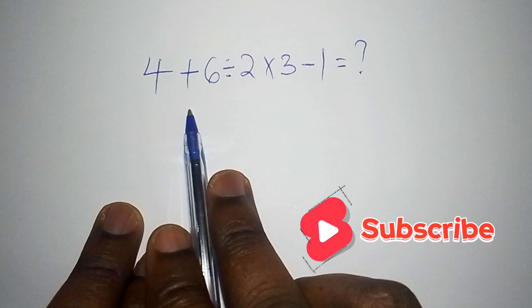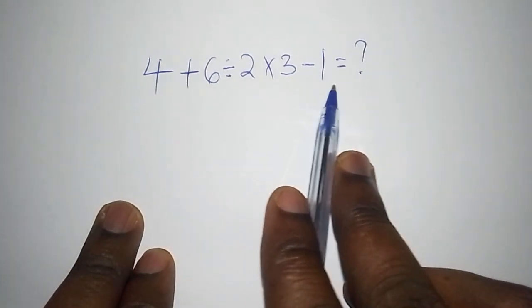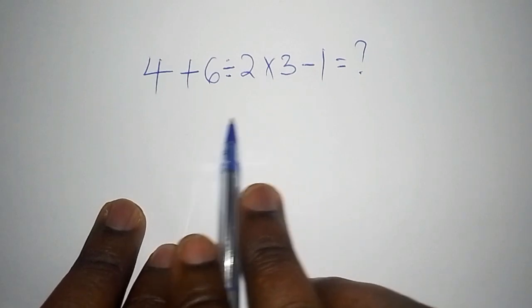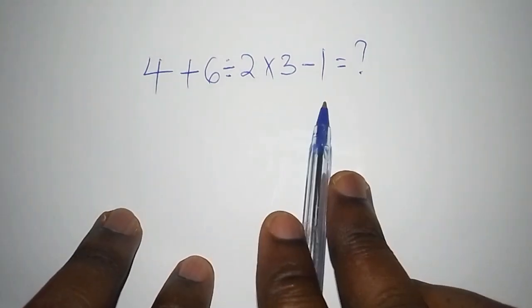Here we have 4 plus 6 divided by 2 multiplied by 3 subtract from 1. I want us to work out some of the mistakes that people do, within some few minutes just hold on.